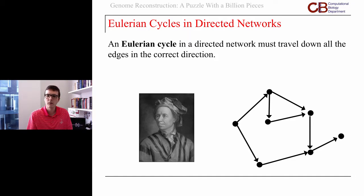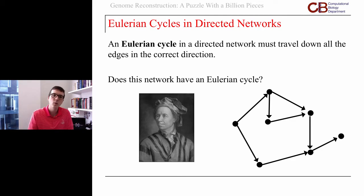Here's a sample network. Does that network have an Eulerian cycle? Is it possible to use every edge once and come back to where you started? Certainly no. If we look at the node on the right, you have one edge in and no way of getting out.